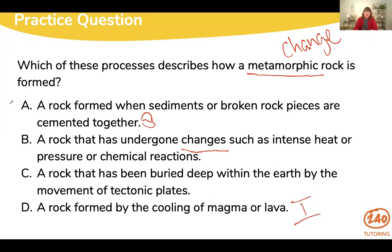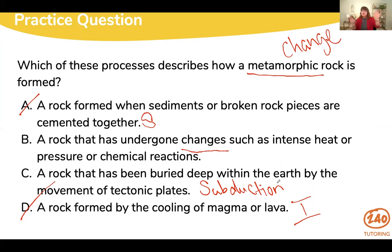So you should have A and D ruled out. If you remember the term subduction, that's what answer C is describing — the movement or burying of those rocks through tectonic plates. Subduction happens before or after a metamorphic rock is formed, but it's not what actually causes it to form. So the correct answer is B: a rock that has undergone changes such as intense heat, pressure, or chemical reactions.